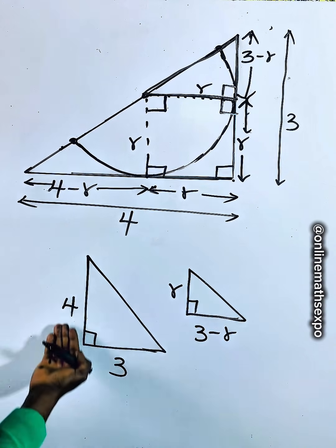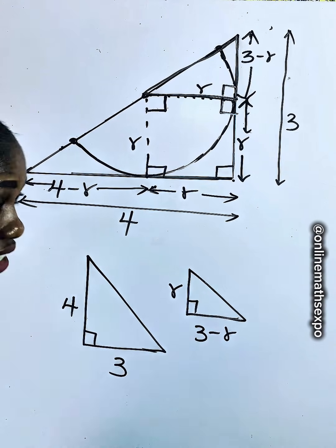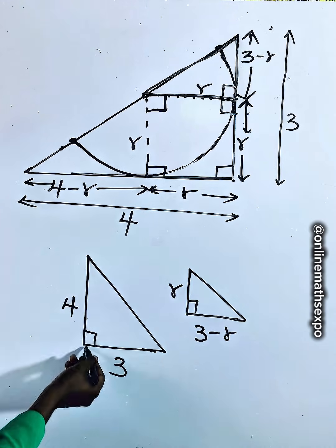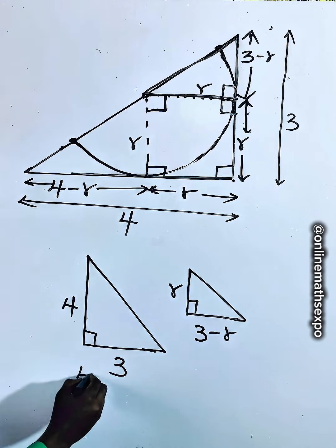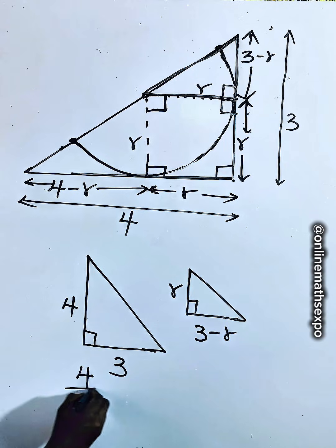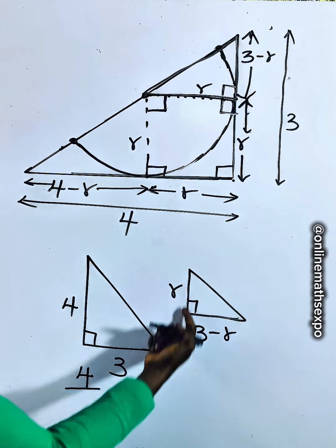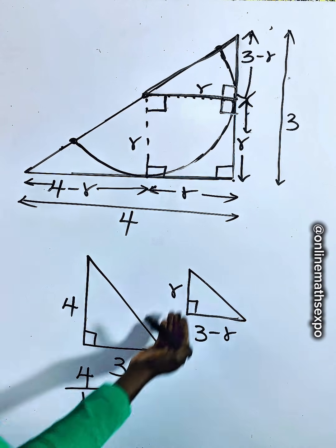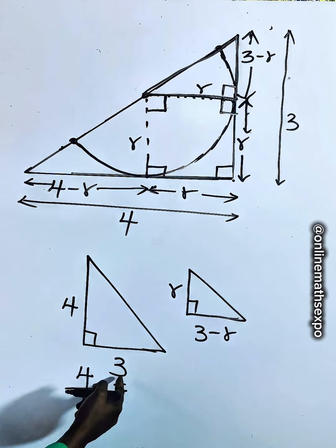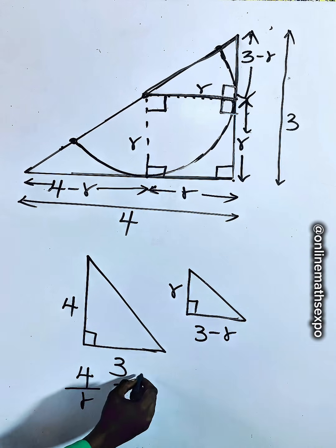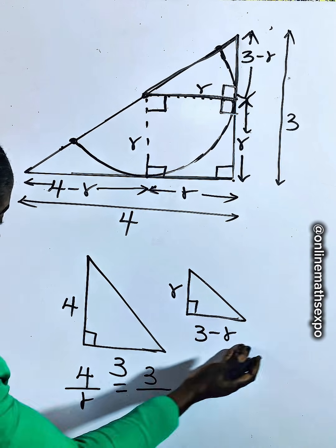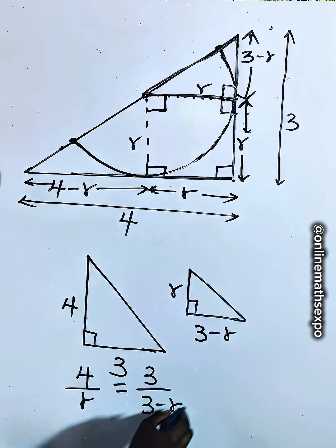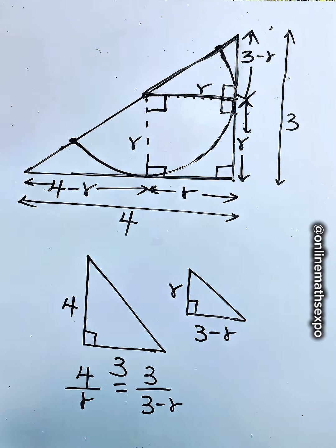This reminds us of the similar triangle property — the sides are proportional. So in that case, this side divided by this side should equal this length divided by this. The ratio gives us 4 divided by R is equal to 3 divided by 3 minus R, because the sides are proportional.